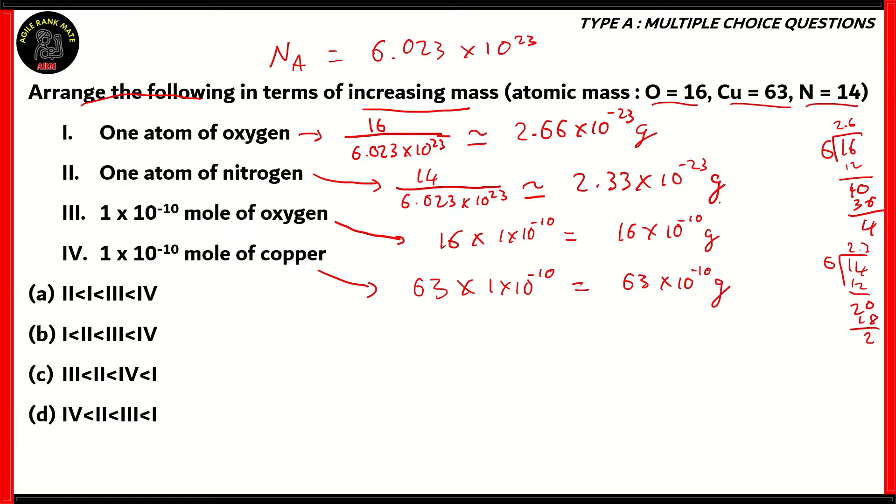Now that we have all of the masses of each scenario converted to grams, we can easily compare. You can clearly see that the one with the higher negative exponent will have the lower mass. And among the ones with 10 raised to minus 23, 2.33 has the lesser mass. Since its number is Roman numeral 2, that will be the place with the least amount of mass, followed by Roman numeral 1. If we compare the masses with the exponent minus 10, you can see that 16 is lower than 63, so we'll put 3 next on the list.